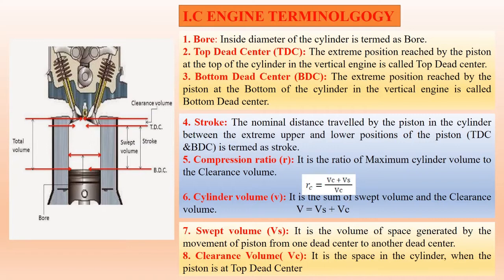Now we need to understand the terminology of the IC engine — this is very important. First is bore, which means the diameter of the piston or cylinder, referred to as cylinder diameter. Top Dead Centre (TDC) is the topmost position of the piston in the cylinder, closest to the cylinder head. Bottom Dead Centre (BDC) is the bottommost position the piston reaches in the cylinder. The stroke is the distance traveled by the piston between TDC and BDC.